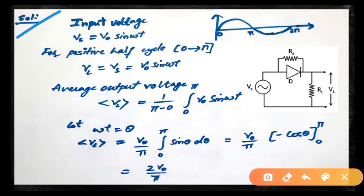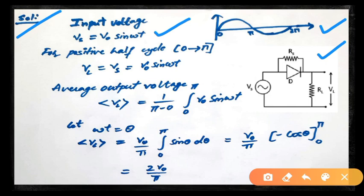Now let's see how to solve this problem. The input source voltage is VS = V0 sin(ωt), a sine wave. To find the average output voltage, we first find the output voltage for the positive half cycle, then for the negative half cycle, and then take the average. The positive half cycle is from 0 to π, during which the diode will be in forward bias.